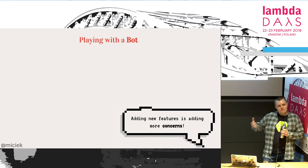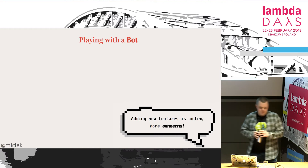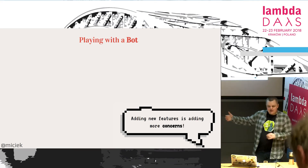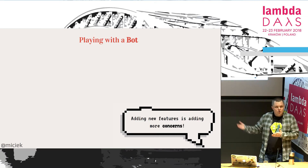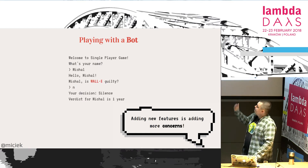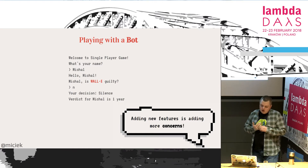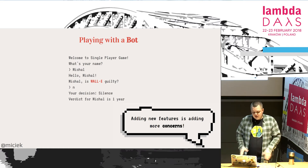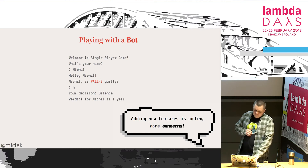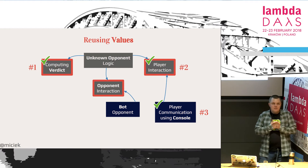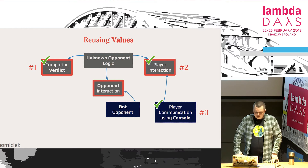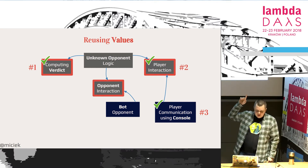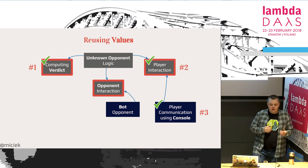We know that when we create the first version, an infinite stream of new features comes into the software. What happens when we can't really play with another player? We still want to play, we have just one computer, no other player — we need to implement a bot. That would look like: introducing ourselves as Jaime and Michal, and then asking whether the other person is guilty or not. Let's implement that, reusing as many concerns as we've already written. We'll reuse the computing verdict, the player interaction, and the console communication. The other ones we'll need to write from scratch.